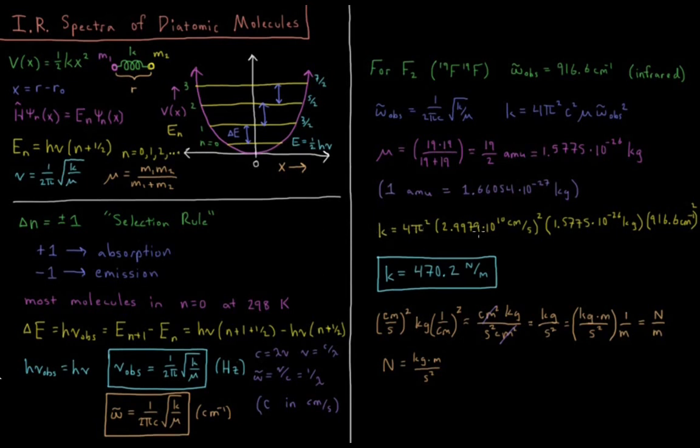We'll substitute in that value, K equals 4 pi squared, speed of light in centimeters per second, 2.9979 times 10 to the 10th, our mass in kilograms times our frequency in wave numbers squared.